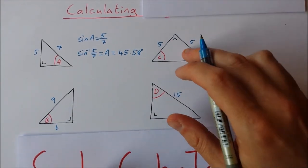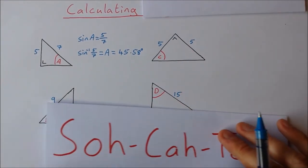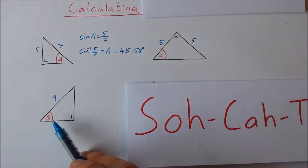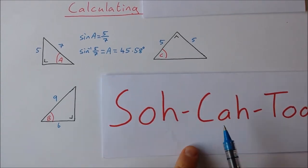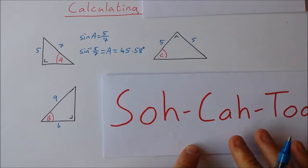Okay let's take a look at the next one here. I'm looking for this angle B. What sides do I have? I have the adjacent side and I have the hypotenuse. So that means I'm going to use cosine because cos is equal to adjacent over hypotenuse.